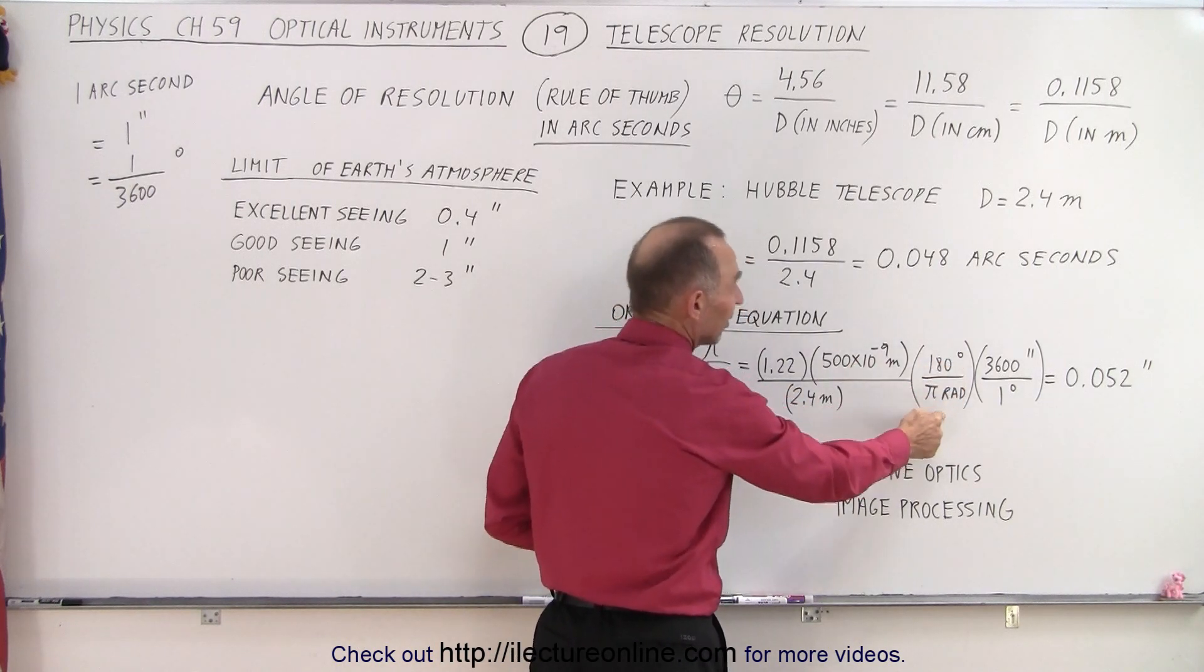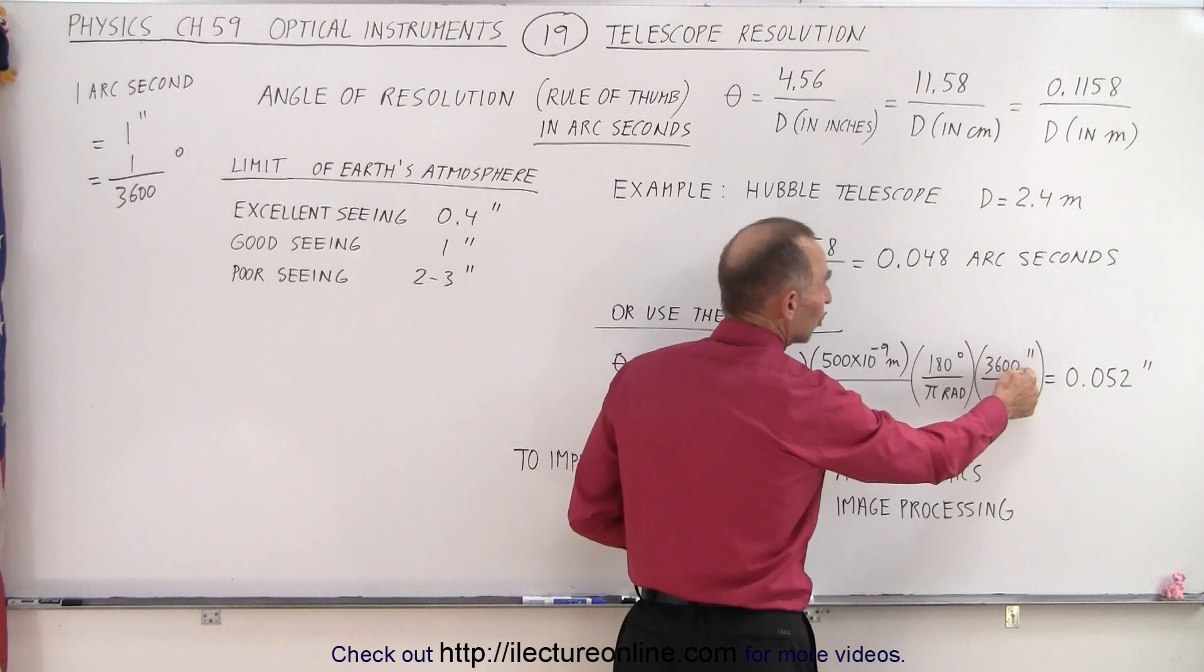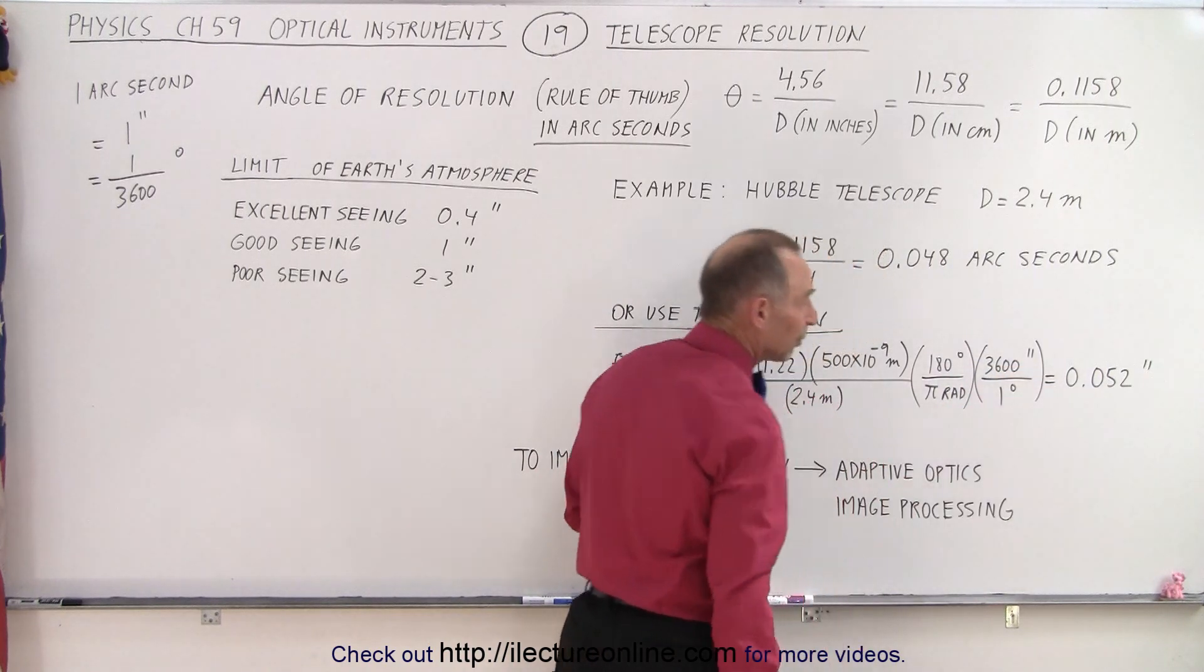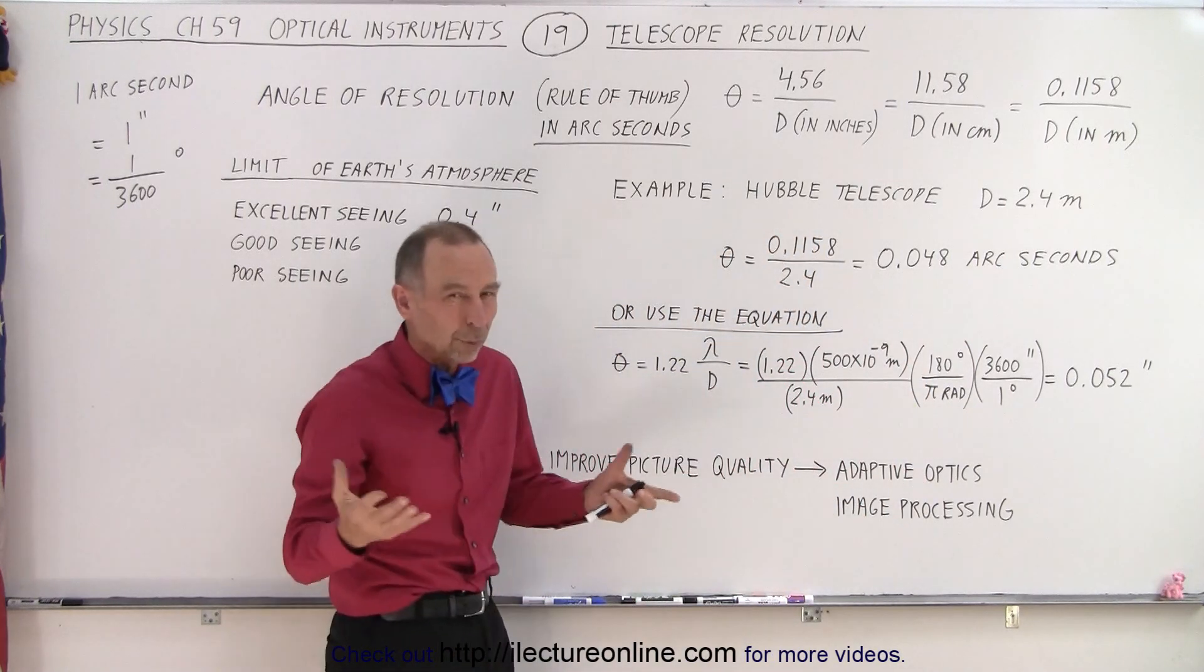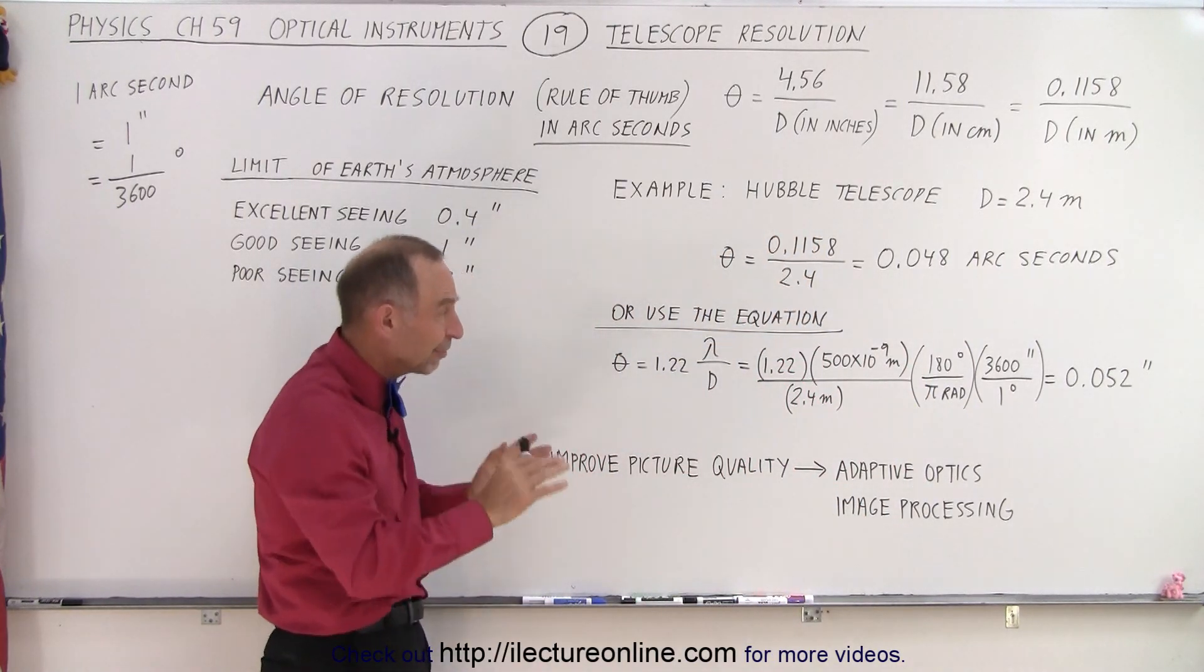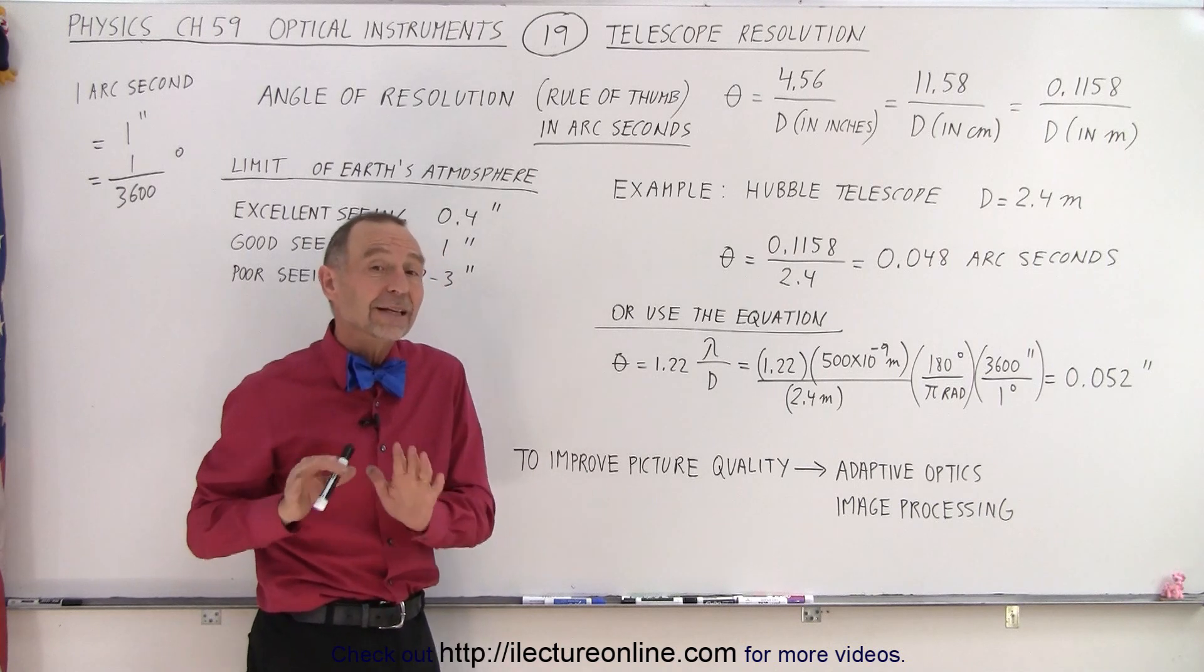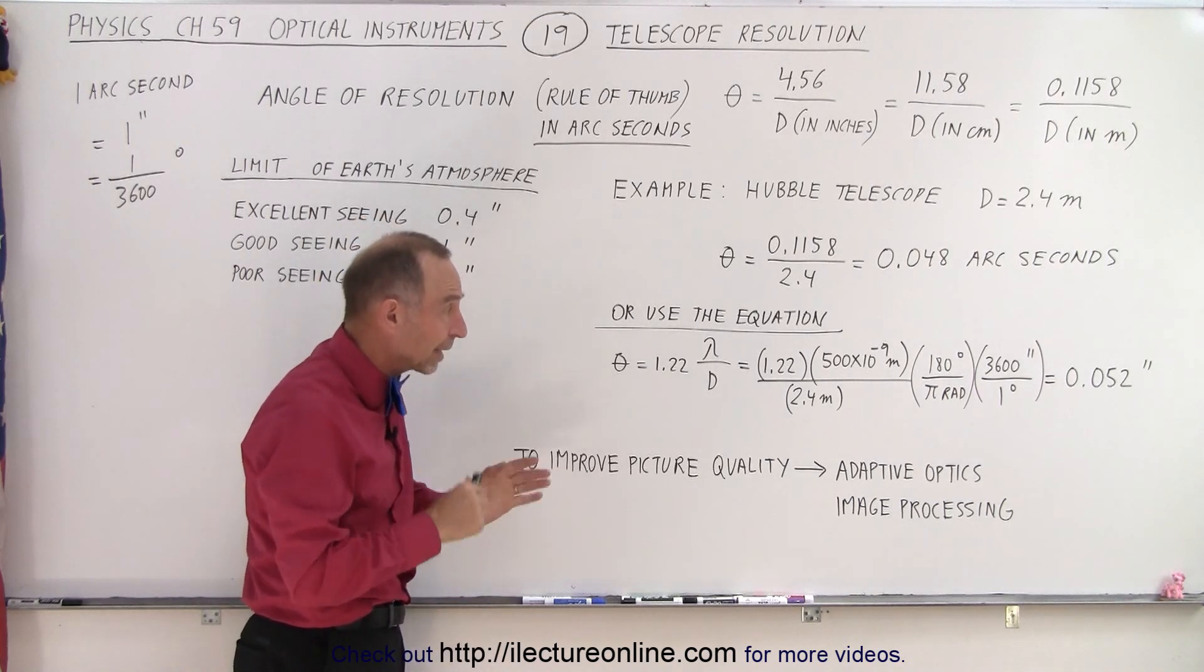And we get 0.052, which is very close to the number we got with the rule of thumb. So, you can see the rule of thumb is fairly good, but, of course, it depends upon what kind of light we're looking at, and it does make a little bit of a difference.